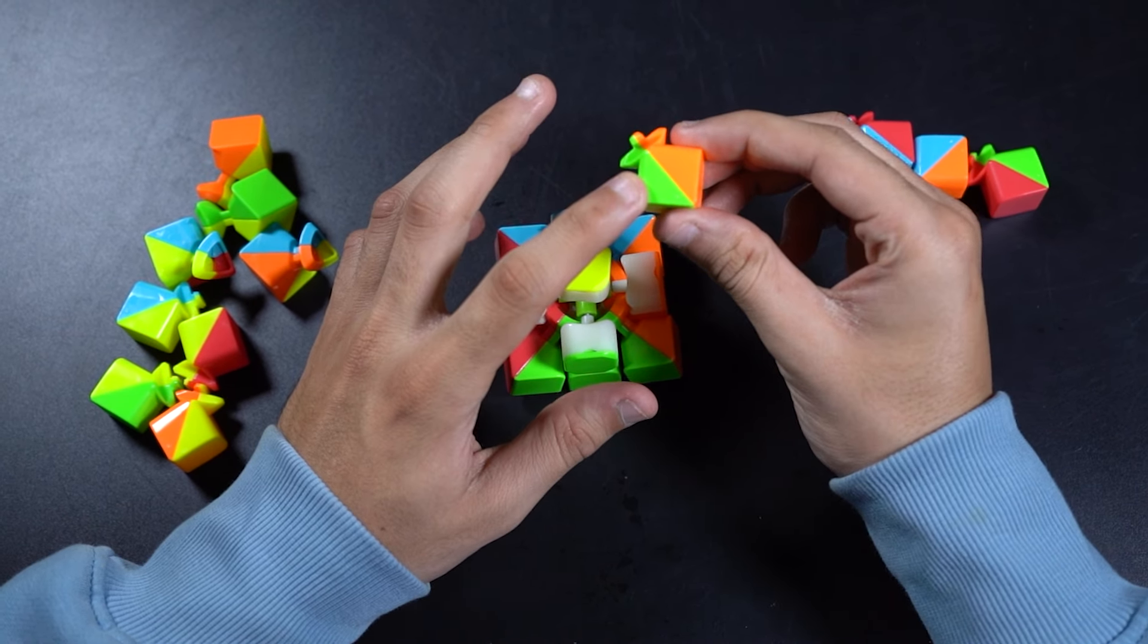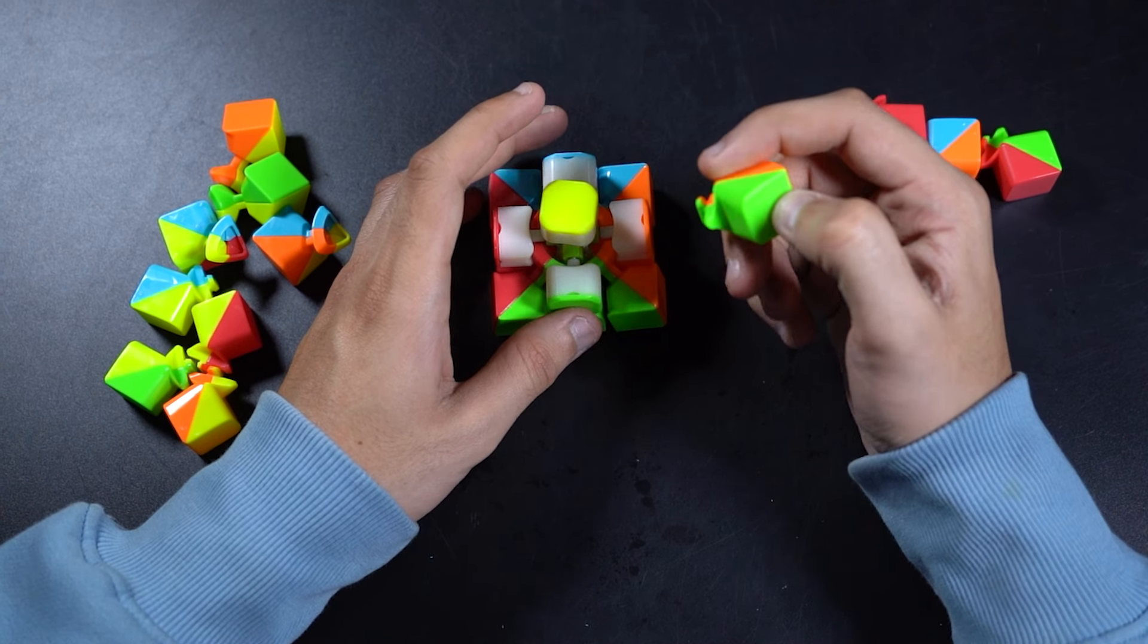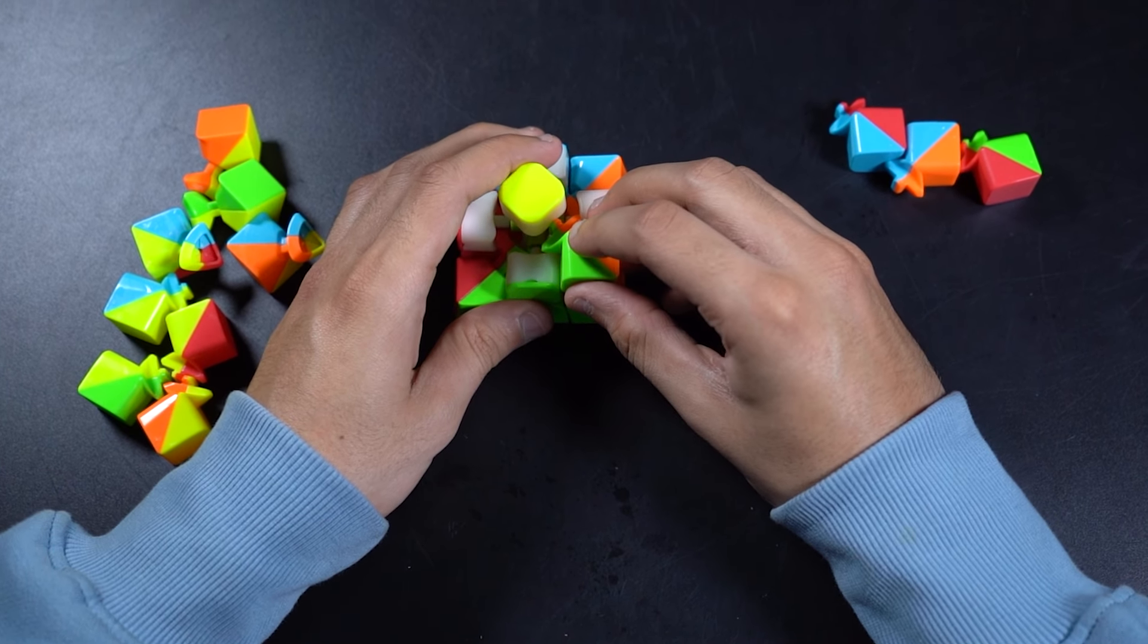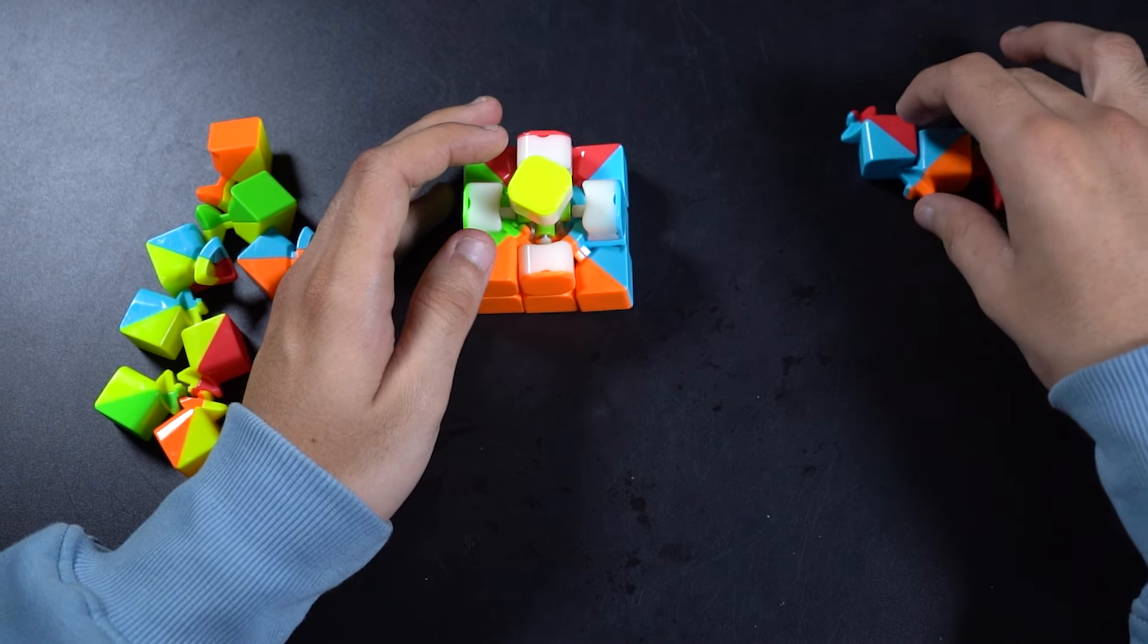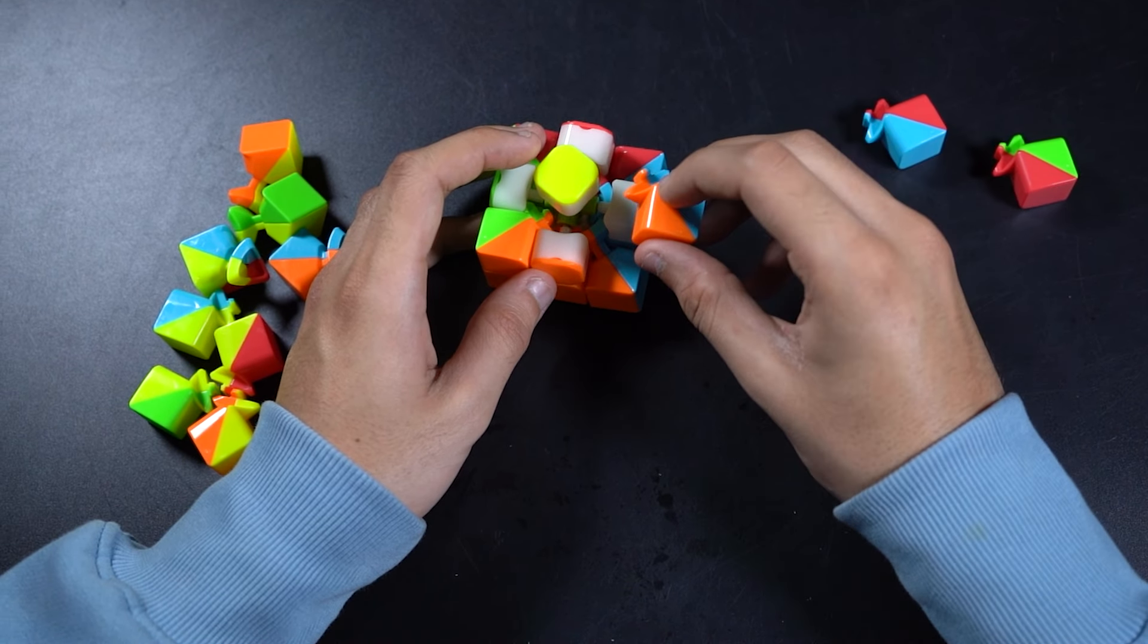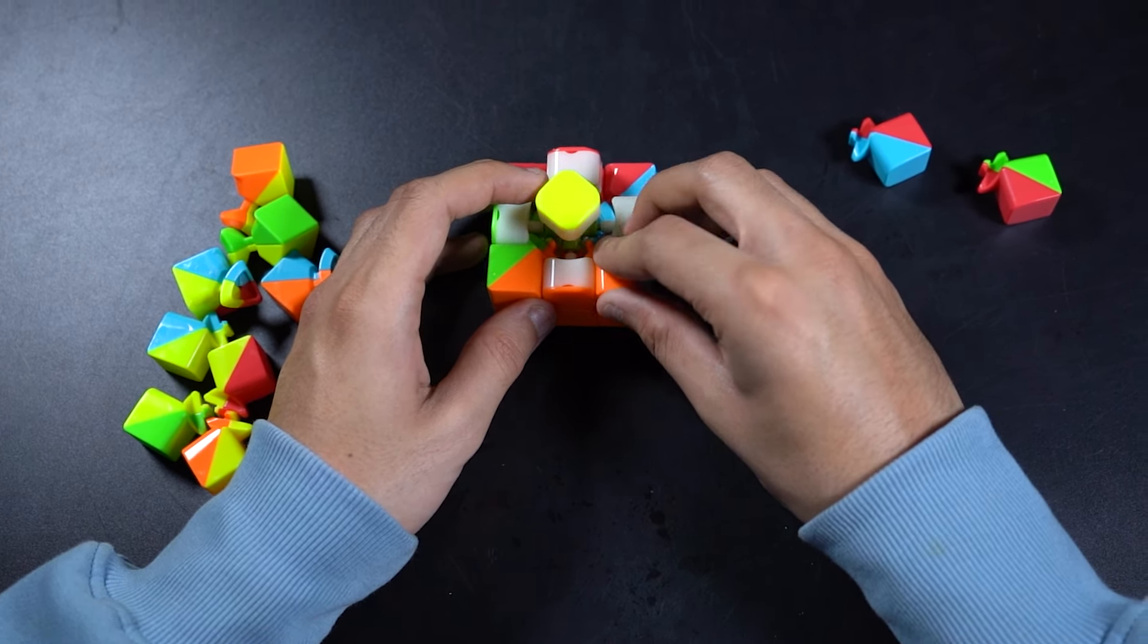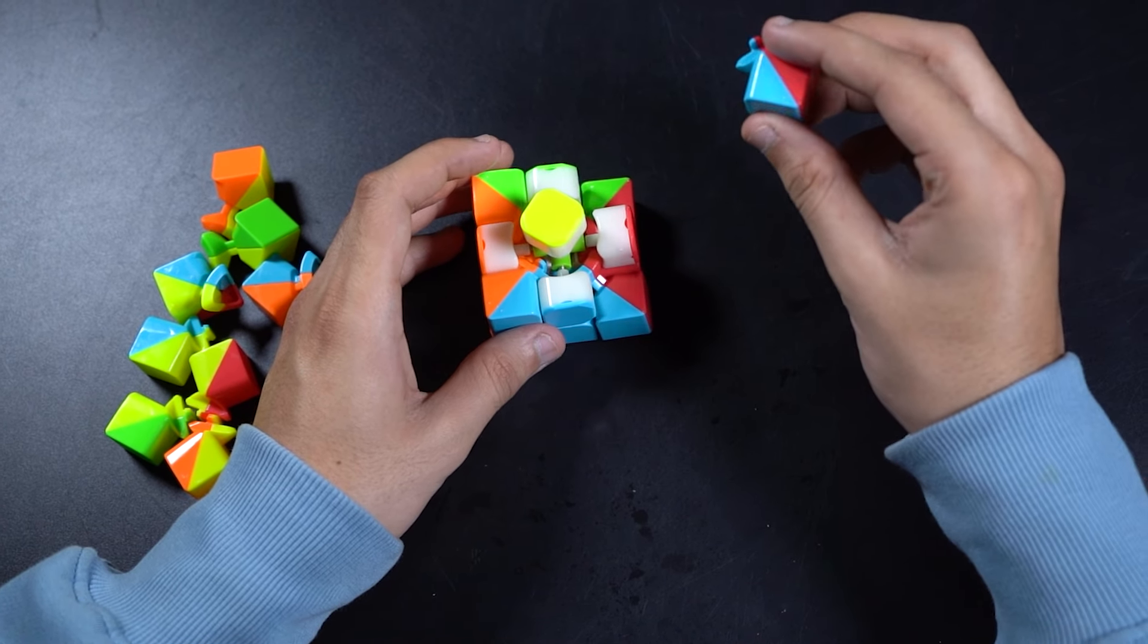This is the green and orange one. So we put it in between the green and orange centers like this. This is the orange and blue one. We put it between the orange and blue centers and then we repeat it for the other edges.